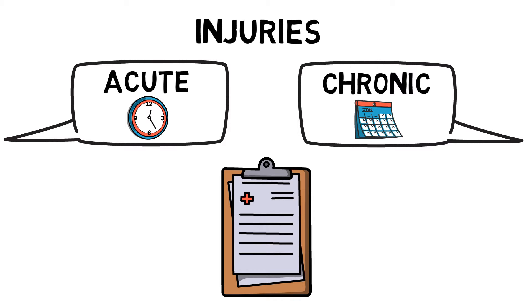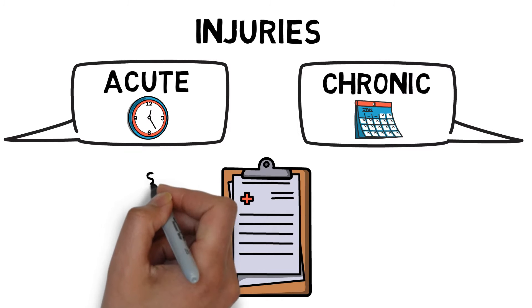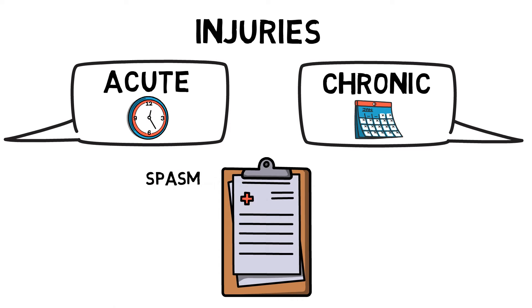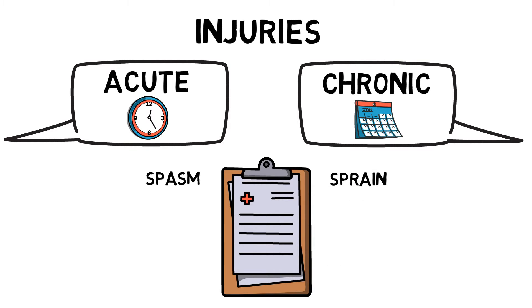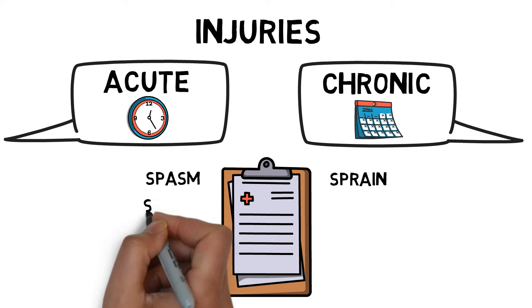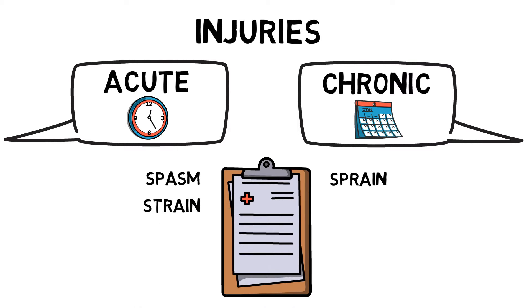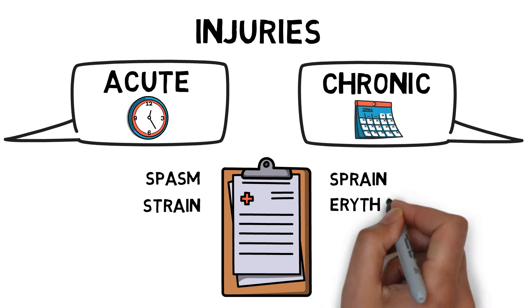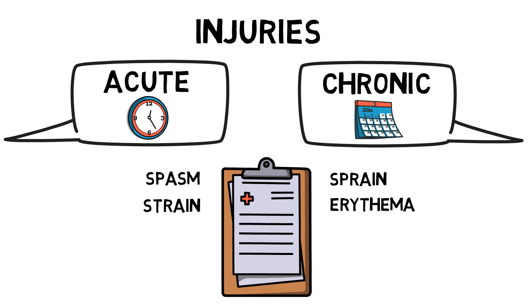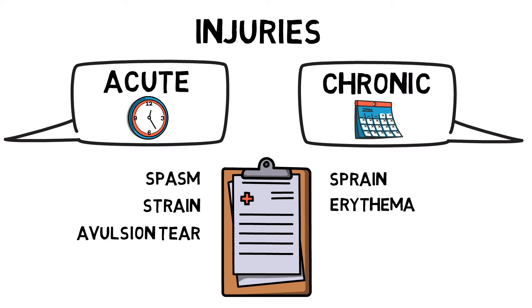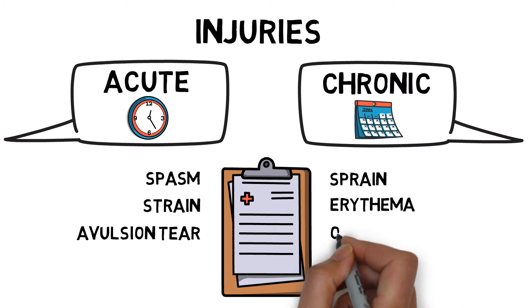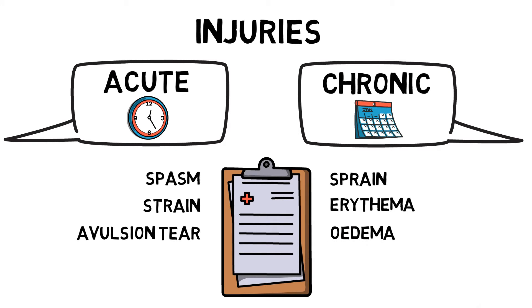Types of injuries include: a spasm, which is an involuntary contraction to protect muscles by stopping them moving; a sprain, which is an overstretch of a ligament; a strain, which is an overstretch of a muscle or tendon; erythema, which is reddening of the skin; an avulsion tear, which is a tendon torn off a bone; and edema, which refers to excess swelling.